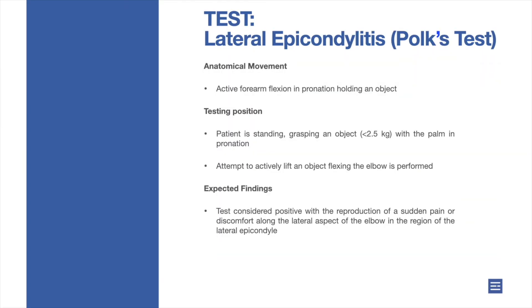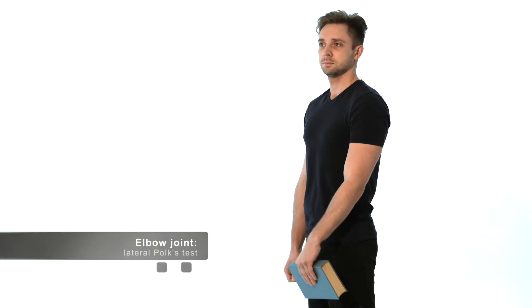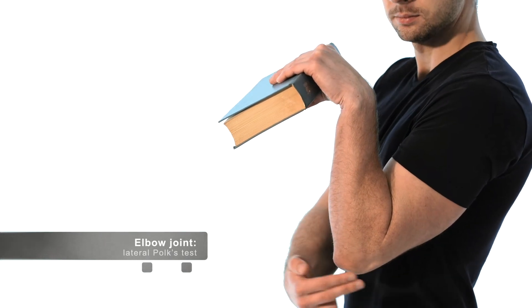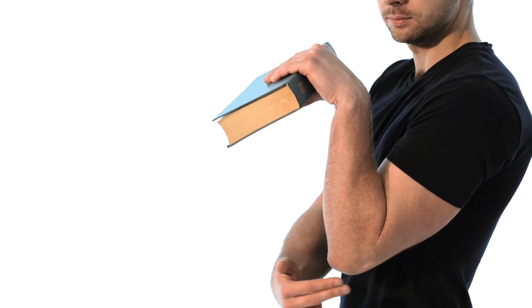Lateral epicondylitis pokes test: active forearm flexion in pronation holding an object. Patient is standing, grasping an object with the palm in pronation. An attempt to actively lift an object by flexing the elbow is performed. The test is considered positive with the reproduction of sudden pain or discomfort along the lateral aspect of the elbow in the region of the lateral epicondyle.